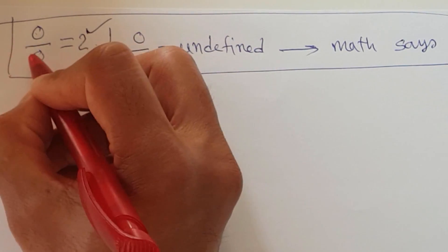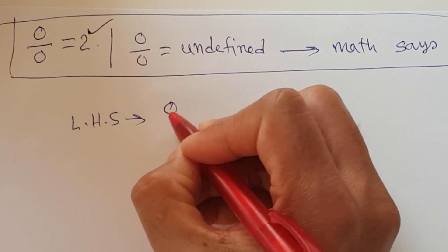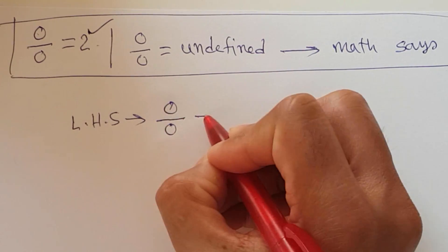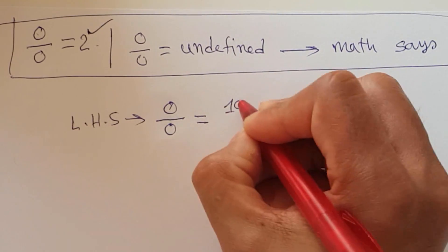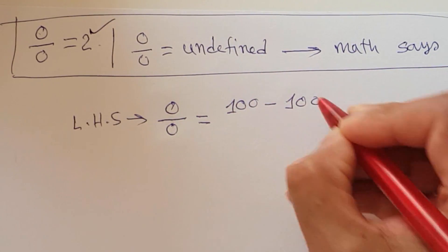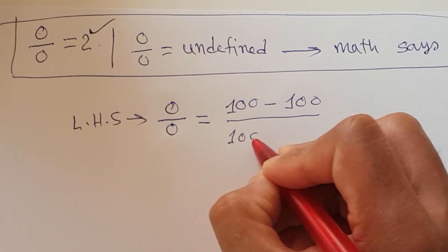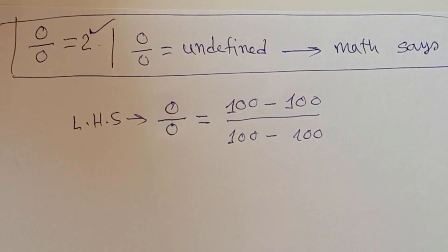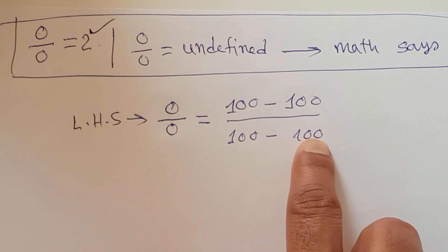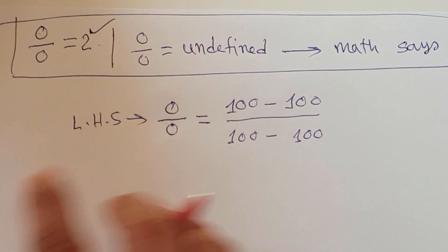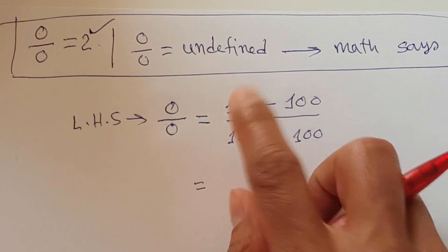Let us consider the left hand side: 0 over 0. I can expand this 0 as 100 minus 100, over 100 minus 100. So 100 minus 100 equals 0, and this 100 minus 100 is also equal to 0. There are no tricks here. Next, I can expand this 100.